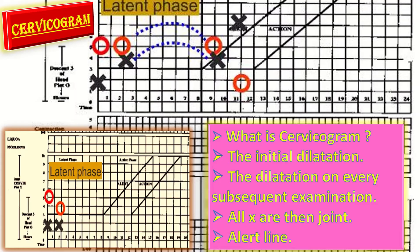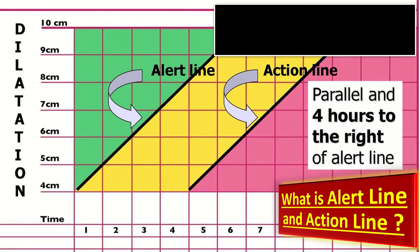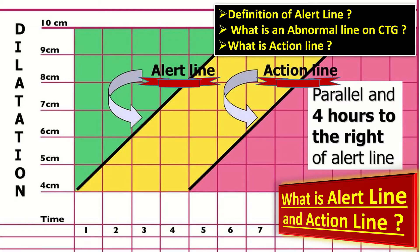What is the alert line? An alert line is a specific line on the partogram which shows cervical dilatation at the rate of 1 cm per hour in the active phase of labour. If the line of the progress of labour extends to the right of the alert line, the progress of labour should be considered abnormal. The green zone is normal, the yellow zone means initiation of abnormality, and the onset of the red or pink zone means we have to take some action. That is why it is called the action line, which is parallel and four hours to the right of the alert line.